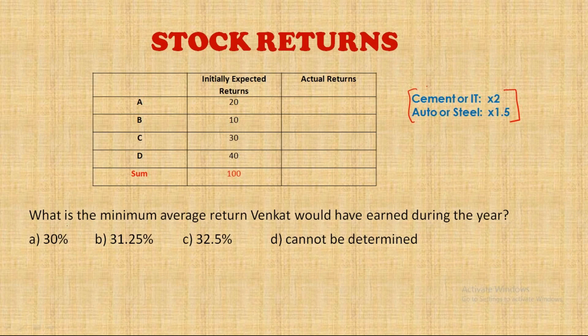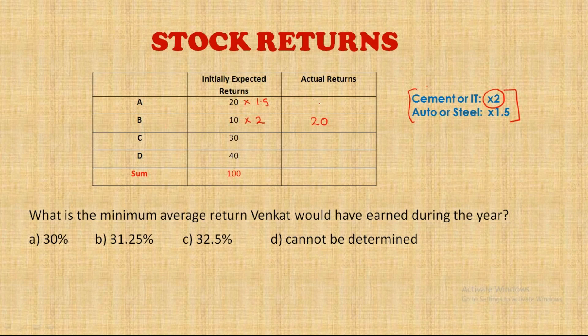The first question asks: what is the minimum average return that the investor could have earned during the year? To find the minimum possible return, we assign the double return to the company with the minimum expected return — that's the one giving only 10 rupees return per share, which doubled becomes 20. The second lowest is 20, so 1.5 times that gives 30.